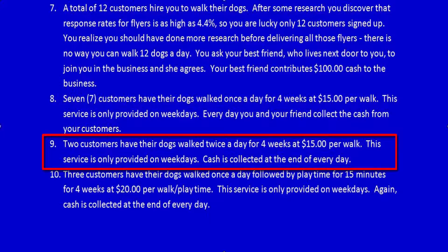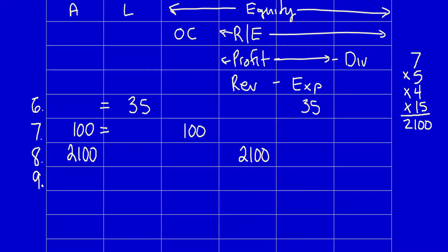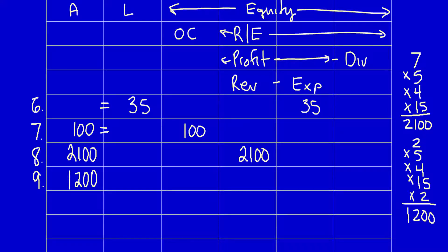Item nine: two customers have their dogs walked twice a day for four weeks at $15 per walk. This service is only provided on weekdays and cash is collected at the end of every day. What did the company get? Cash — an asset with future economic benefit. The calculation: 2 customers × 5 days a week × 4 weeks × $15 per walk × 2 walks a day = $1,200. What did the company give away? They provided a service, so revenue increases by $1,200.